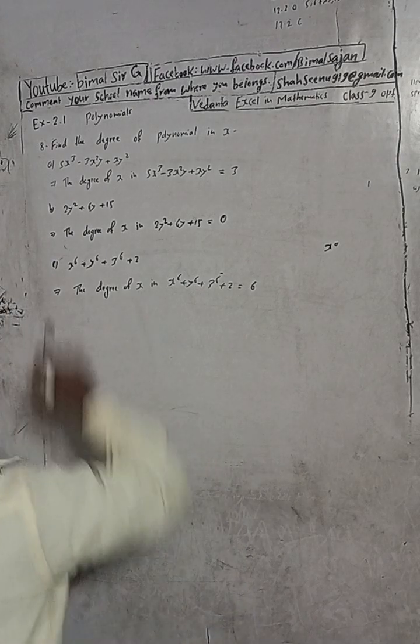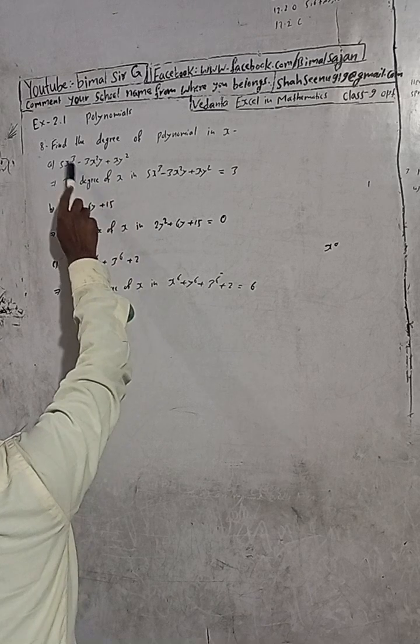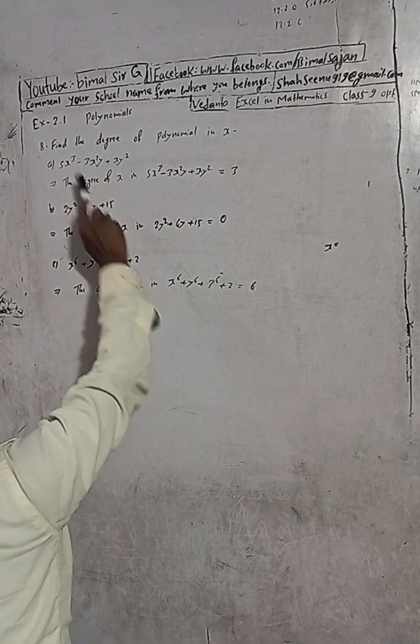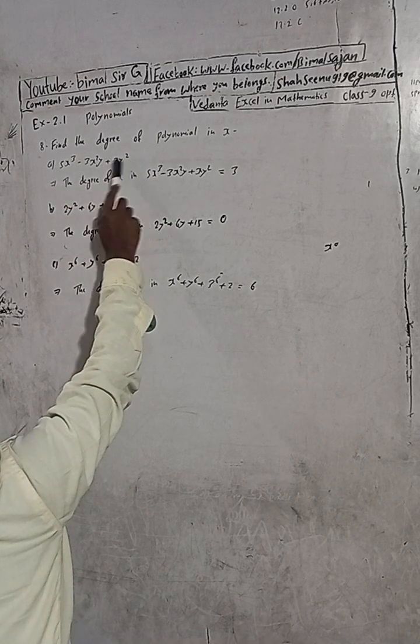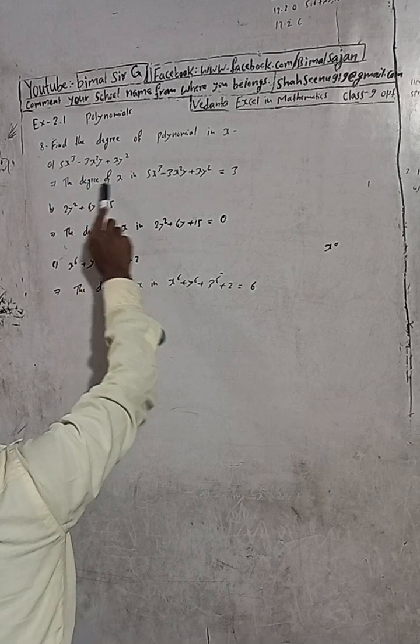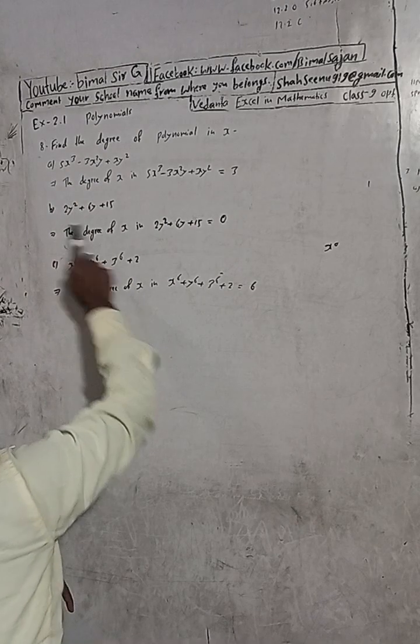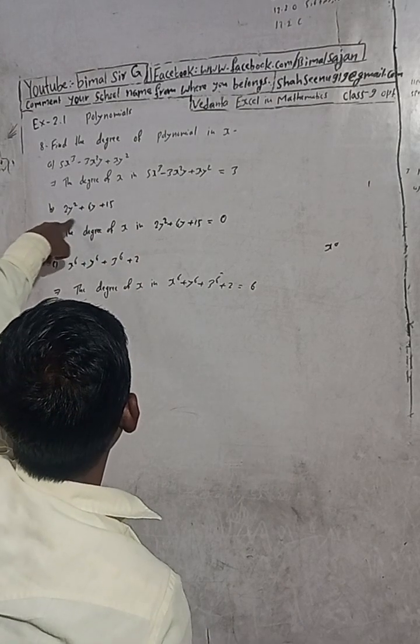To find the degree of polynomial in x: In equation 1, x has power 3, power 2, and power 1, therefore the highest power is 3. For x⁶ + y⁶ + other terms, x has power 6, which is the highest power, so the degree is 6.